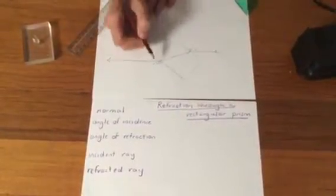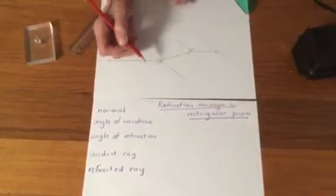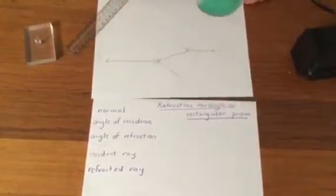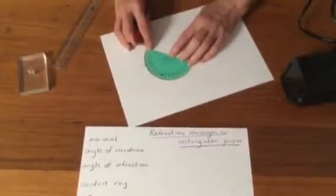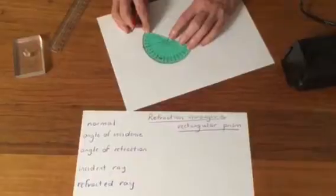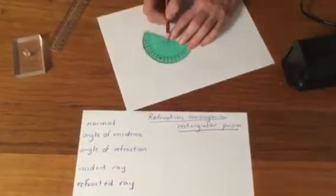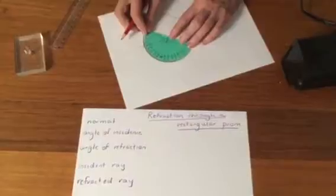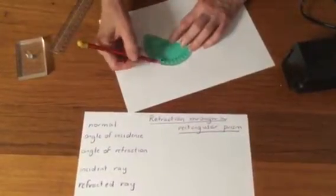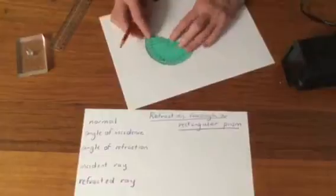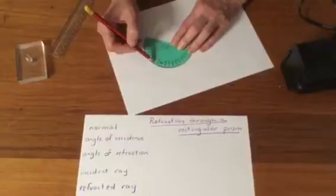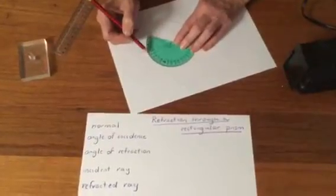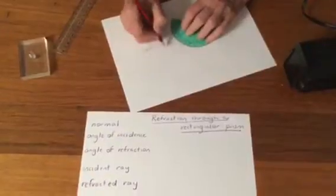Now to measure the values of those then we would have to put our protractor in this position, making sure you've got the cross right on that point there. And we're counting back this way so 10, 20, 30, 40, 50, 54 degree angle there that I've drawn.